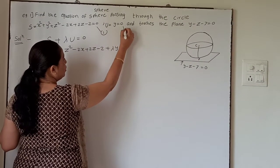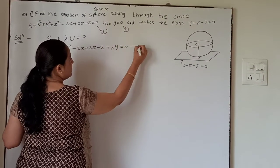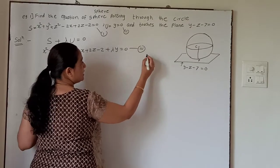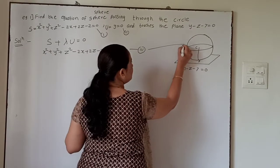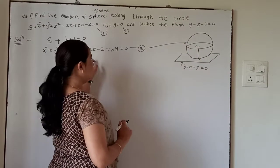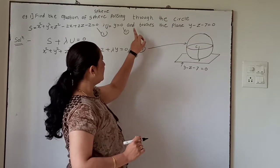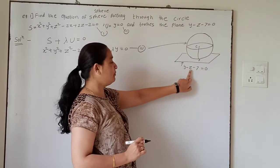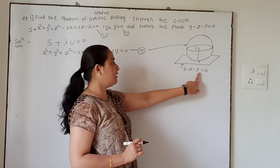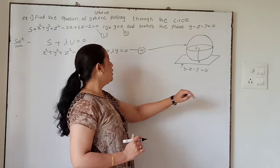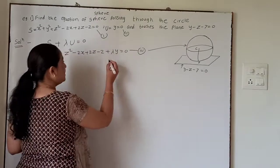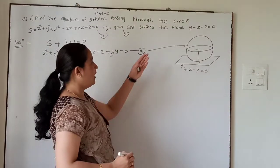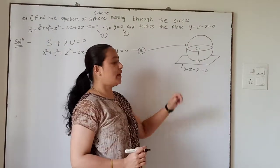We label these as equation 2 and equation 3. This is the required sphere. Since the required sphere touches the plane y − z − 7 = 0, we will use the condition of tangency to find the unknown λ.